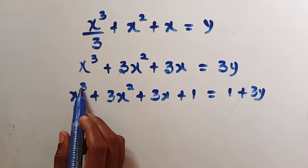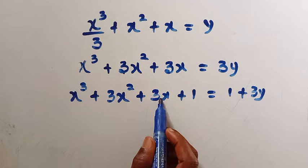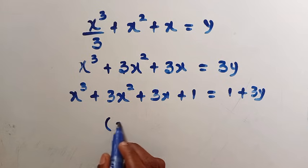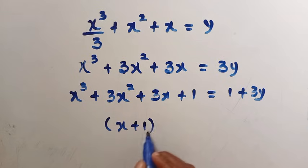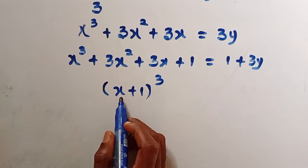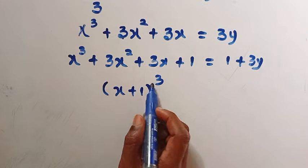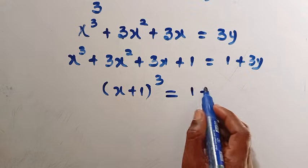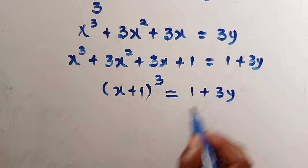If you consider x cubed plus 3x squared plus 3x plus 1, this is just when we have x plus 1 raised to power of 3. By trying to use the Pascal triangle coefficient, we get the whole of this. Then this equals 1 plus 3y.